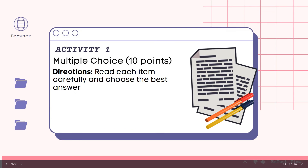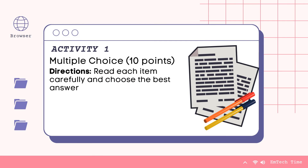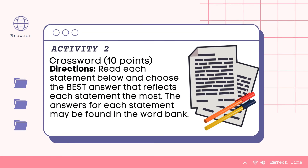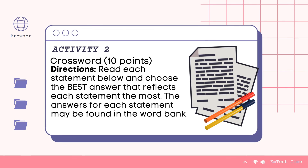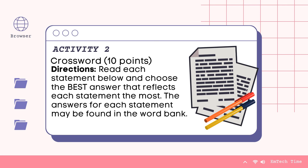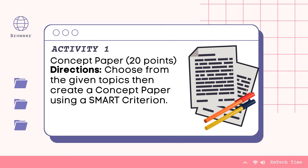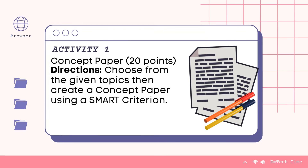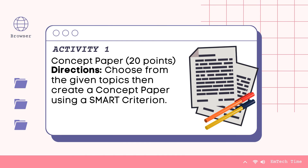For this week, Activity One is Multiple Choice — read each item carefully and choose the best answer. Activity Two is Crosswords — read each statement on the given worksheet and choose the best answer that reflects each statement the most; the answer for each statement may be found in the word bank, which is available in your PDF, Word file, or hard copy. Activity Three will be one of your first performance tasks or projects in the subject Empowerment Technology — choose from the given topics then create a concept paper using the SMART criterion. Your concept paper can be submitted in hard copy to school or via Google Classroom.